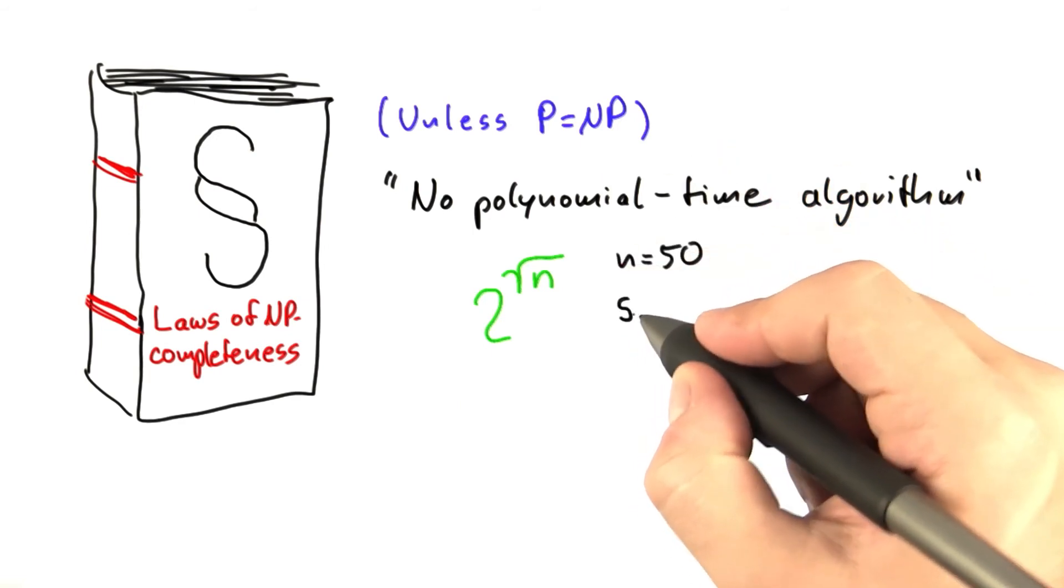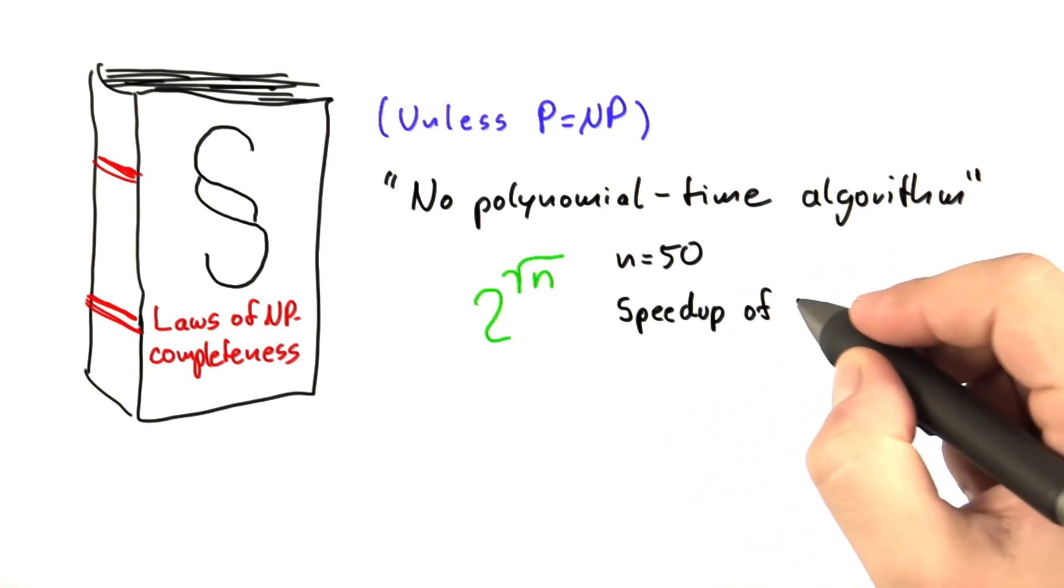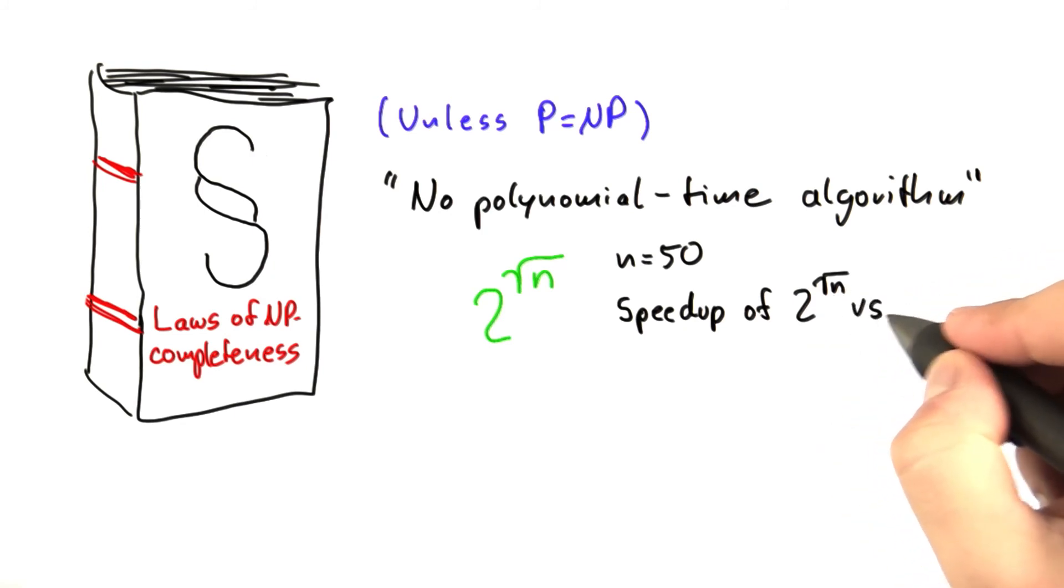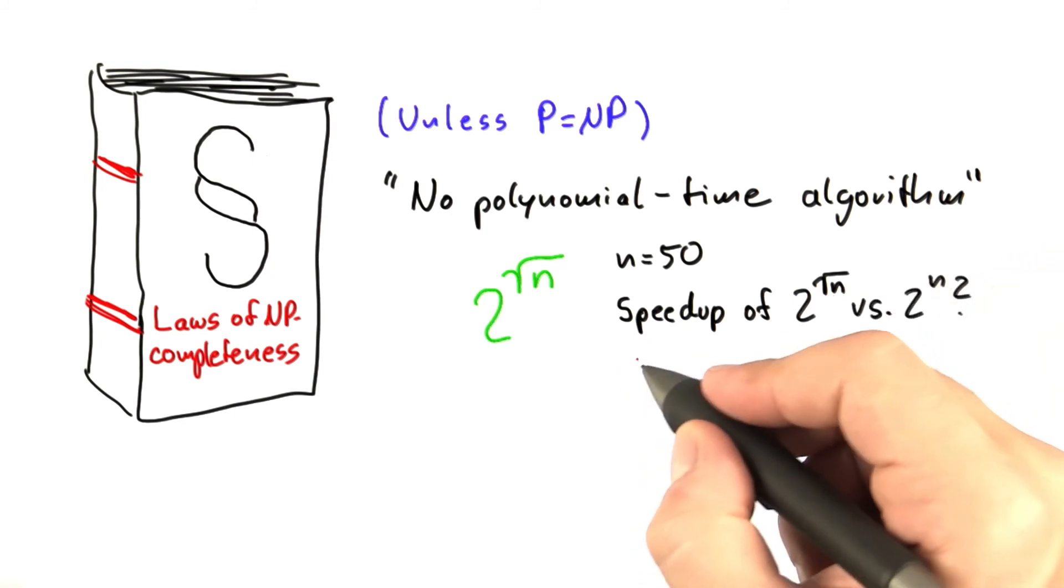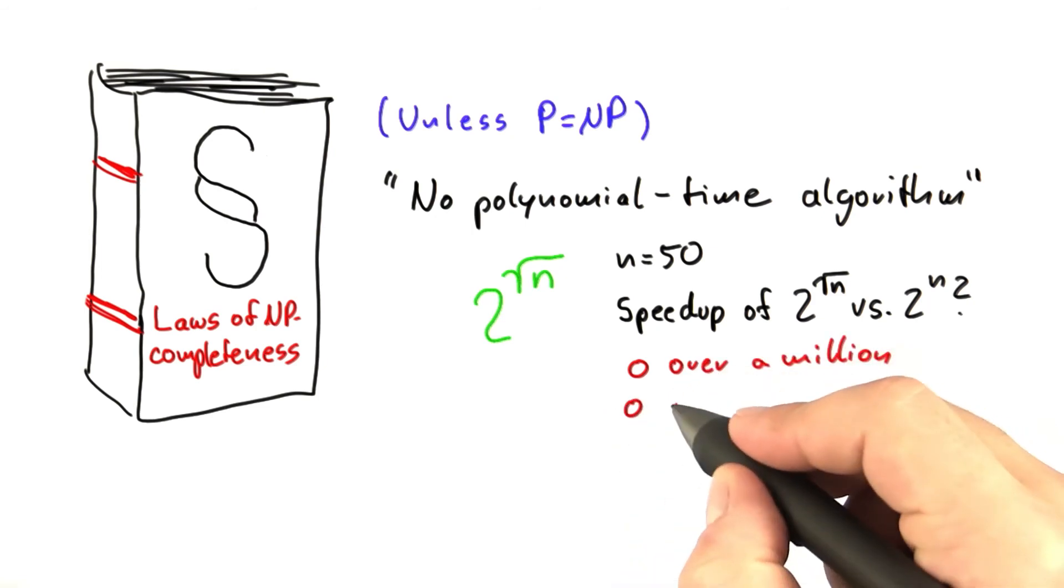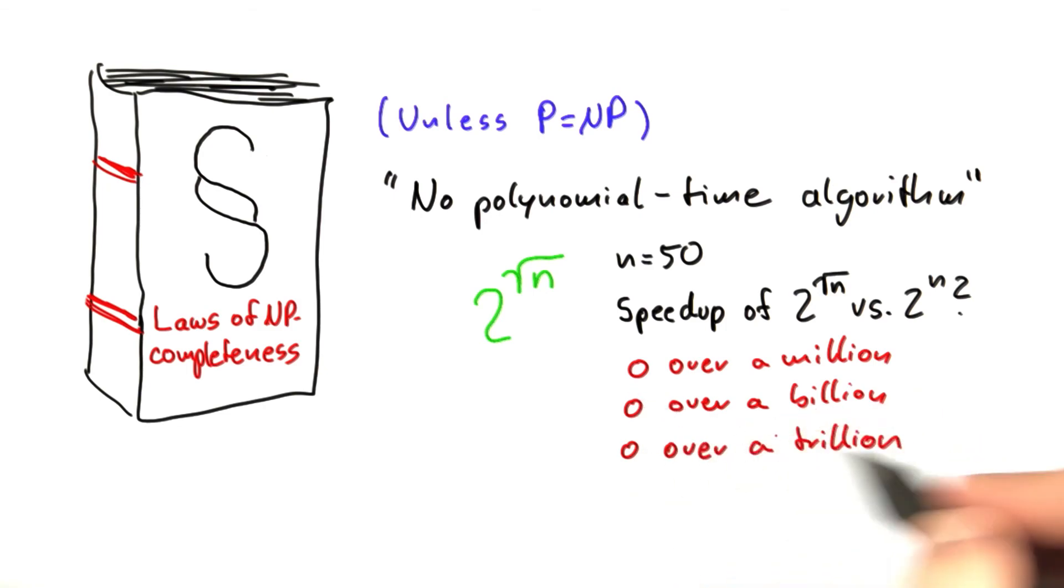Let's say n equals 50. If n equals 50, what is the speedup of 2 to the power of the square root of n versus 2 to the power of n? Of course, we're going to do this as a quiz. Is it over a million? Is it over a billion? Or is it over a trillion? I only want you to select one answer here, the best possible one.